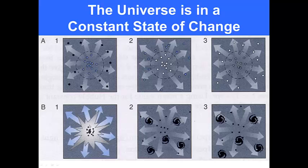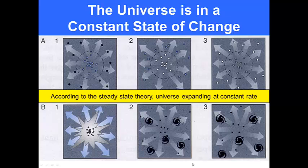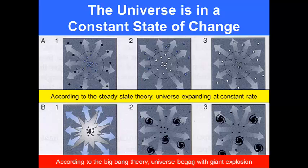The second is the Big Bang Theory where you have highly dense composition of matter in the middle that explodes outwards and radiates particles outwards causing a gradual diffusion of matter from the inside of the Big Bang to the outside. According to the steady state theory, the universe is expanding at a constant rate. According to the Big Bang Theory, the universe began with a giant explosion.